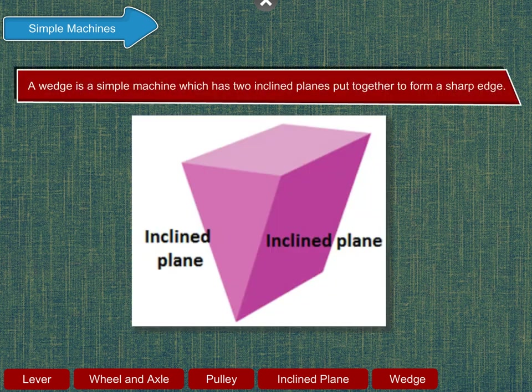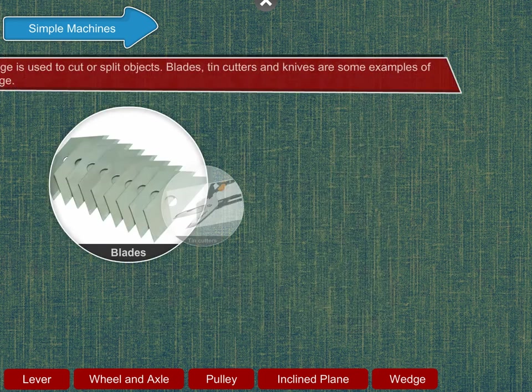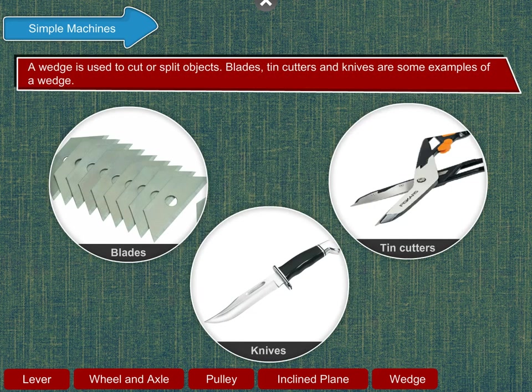A wedge is a simple machine which has two inclined planes put together to form a sharp edge. A wedge is used to cut or split objects. Blades, tin cutters and knives are some examples of a wedge.